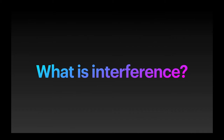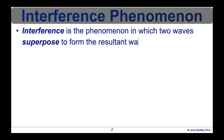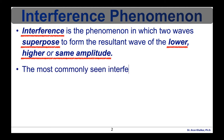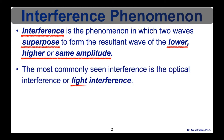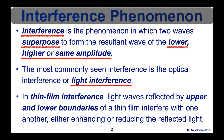Interference is a natural phenomenon that happens at every place and at every moment, yet we don't see interference patterns everywhere. Interference is the phenomenon in which two waves superpose to form a resultant wave of lower, higher, or the same amplitude. The most commonly seen interference is optical interference, or light interference, because light waves are randomly generated from most sources — meaning they do not have a constant amplitude, frequency, or phase.